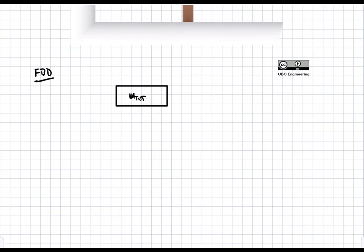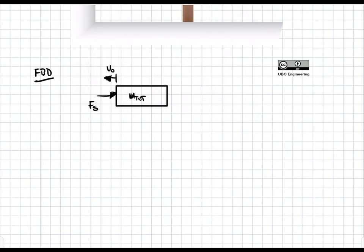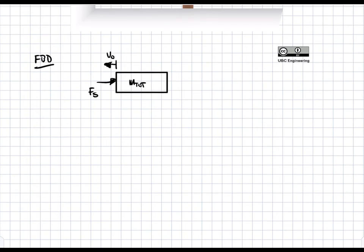Then we have a spring force. Since our initial velocity is in that direction, we are going to have a spring force opposite to the displacement, because compression leads to a force opposite to the direction of compression. So the compression of the spring leads to a force fs towards the right. There is no friction, nothing else — so there is only one force acting on this block.